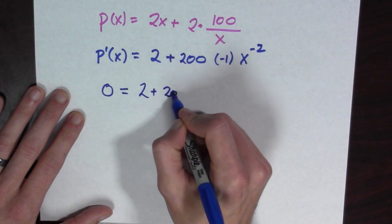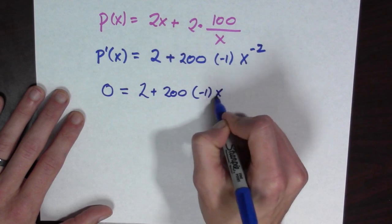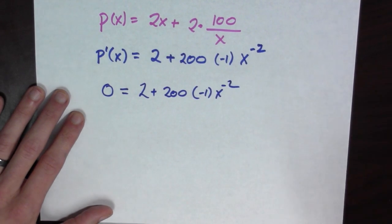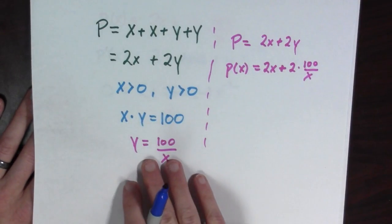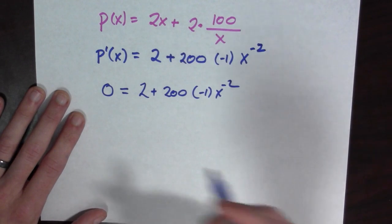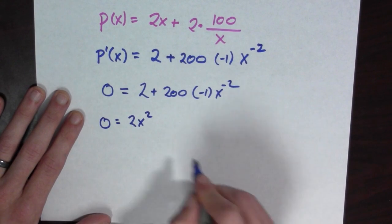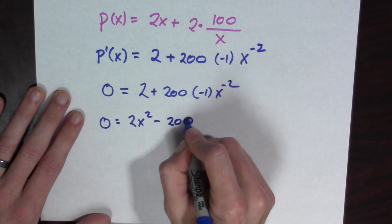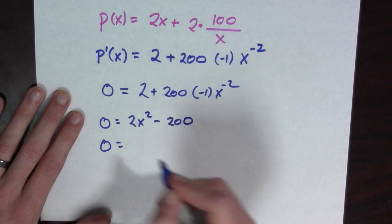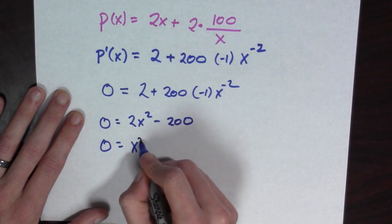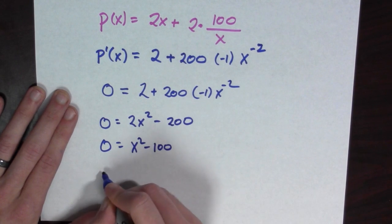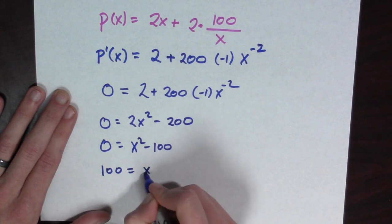Well, let's see what happens when the derivative equals 0. So that's 2 plus 200 times minus 1 x to the negative 2. I'm going to multiply everything by x squared if I assume that x is not equal to 0, which was, as you recall, one of my constraints. So I'm going to get 0 is equal to 2 x squared minus 200. Divide everything by 2. 0 is equal to x squared minus 100. 100 is equal to x squared.